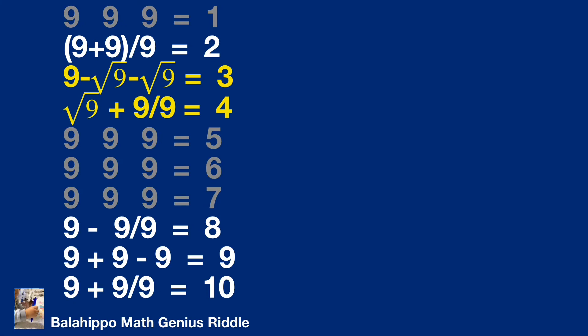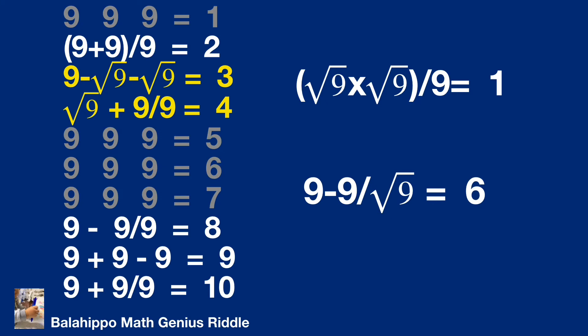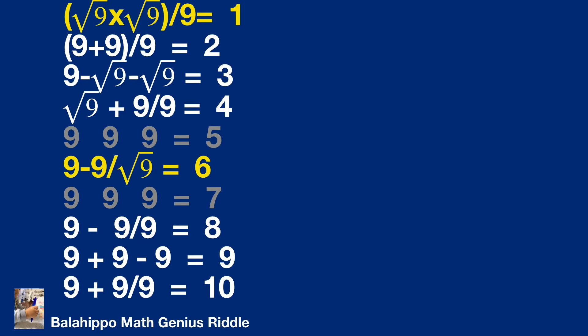Furthermore, bracket square root of 9 times square root of 9 close bracket over 9 equals 1. 9 minus 9 over square root of 9 equals 6. We add these two equations.